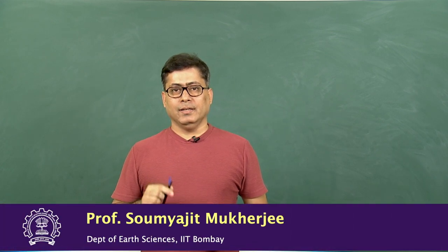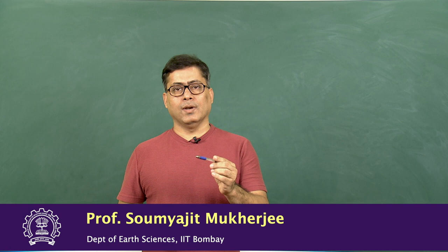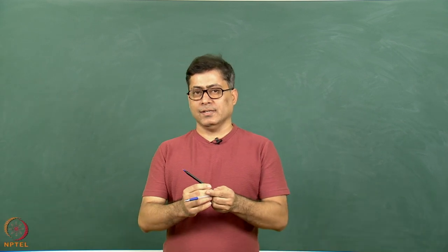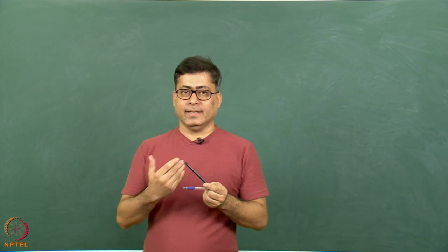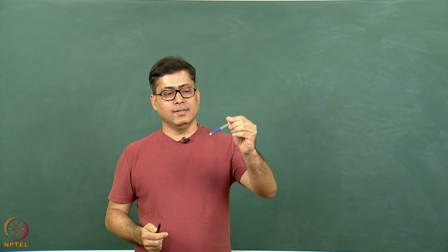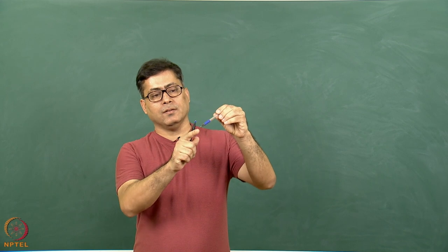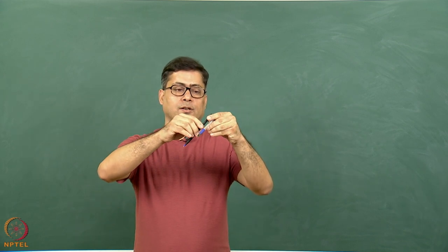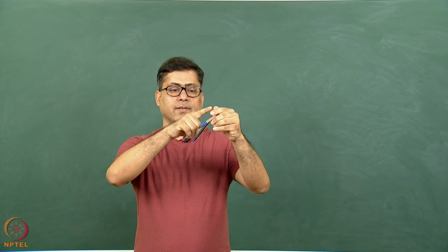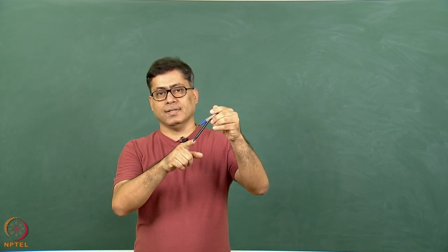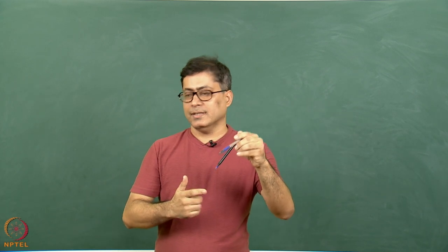We have seen in the last example that if in space there are two lines of actions of stresses, how to find out the resultant stress. We are going to see now a second process which is interesting. Imagine this is one line of action of stress acting in the down-plunge direction. There is another line of action of stress given by the black pen, also giving a down-plunge direction of stress. How to find out the resultant stress?